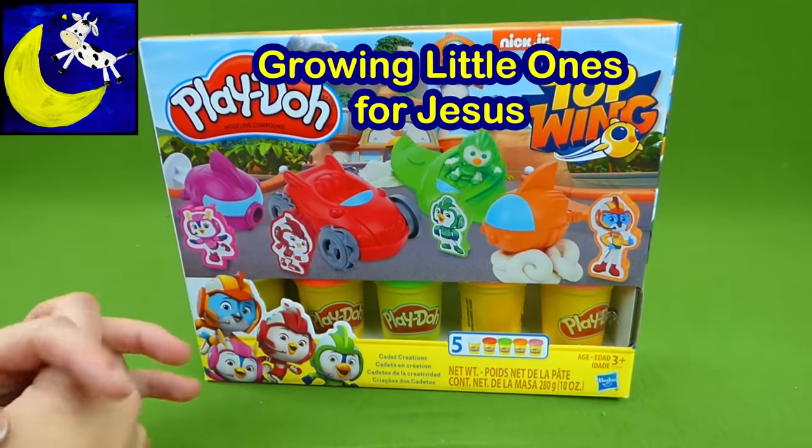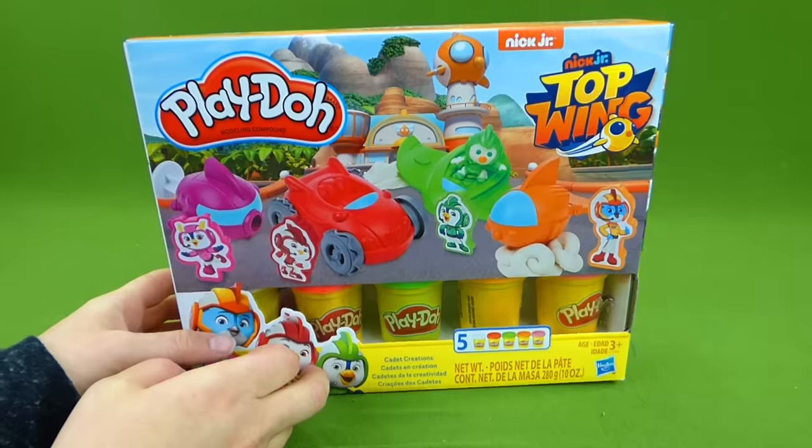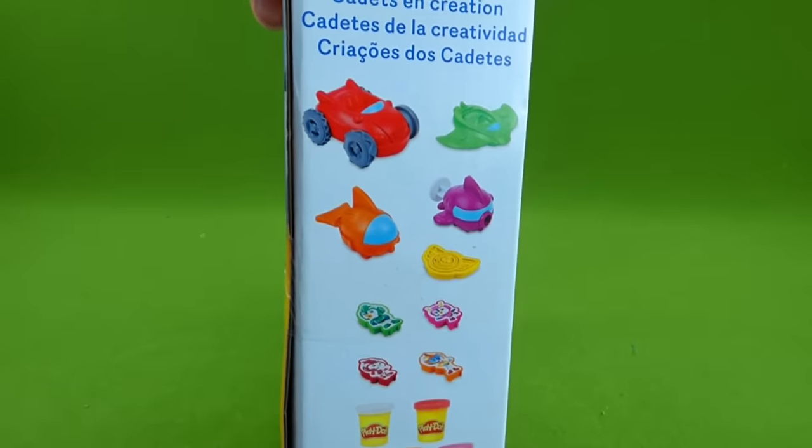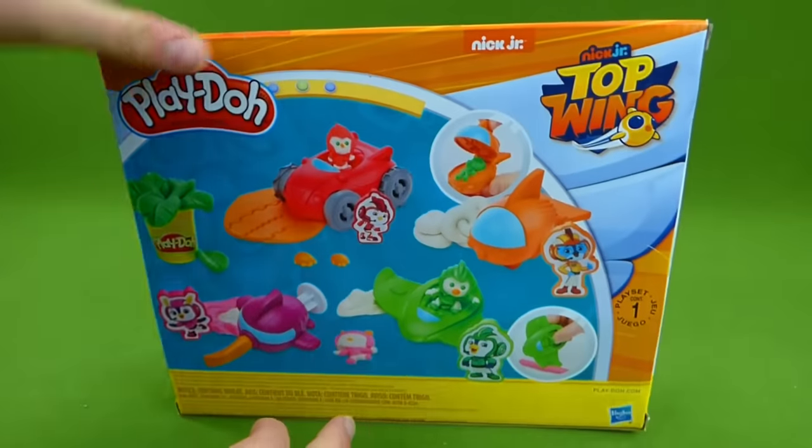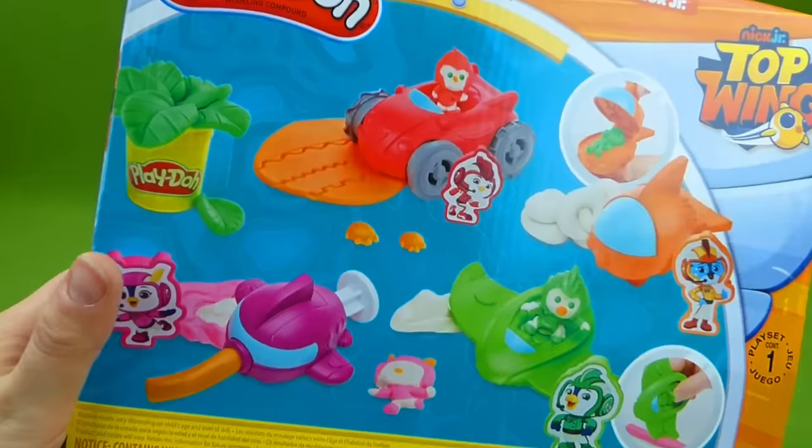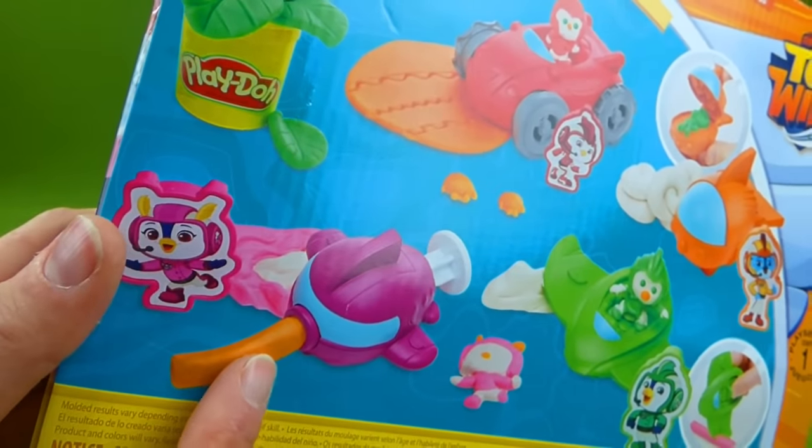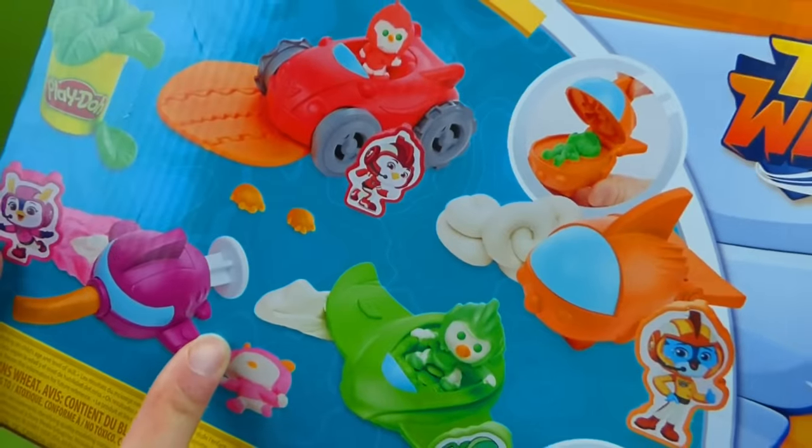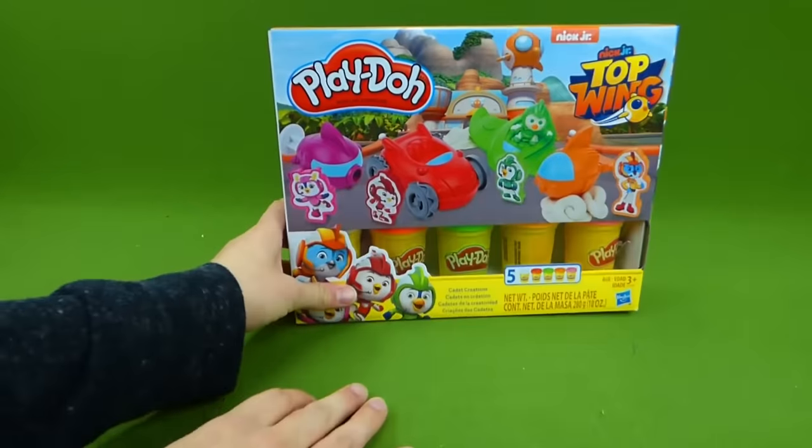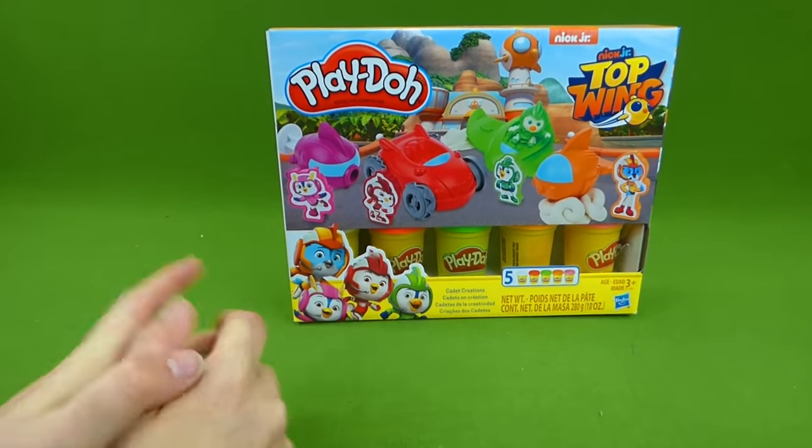Hey everybody, look what we have to play with today. It's the Top Wings Play-Doh set. Look at all the things it comes with. And we love the Top Wings show. And you've got all of the cool vehicles. Whoa, I can't wait to try that out. So neat. So we're going to get everything out of this box and see if we can create some fun things.